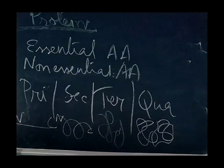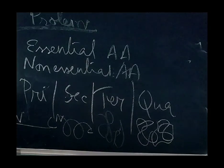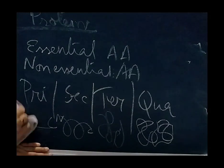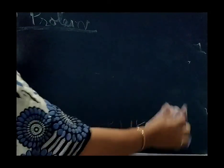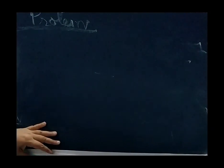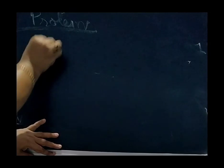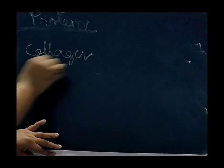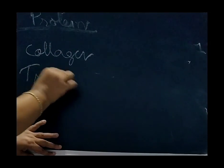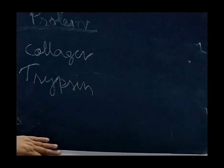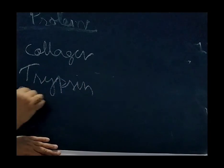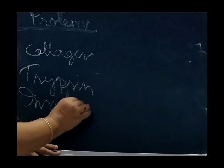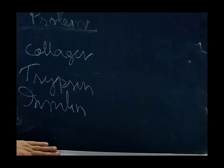Now types of proteins, this can be fibrous protein, globular protein. Various proteins are there in our body which perform different kinds of functions like collagen, trypsin, insulin. So different types of protein structures are there. Antibody is there.